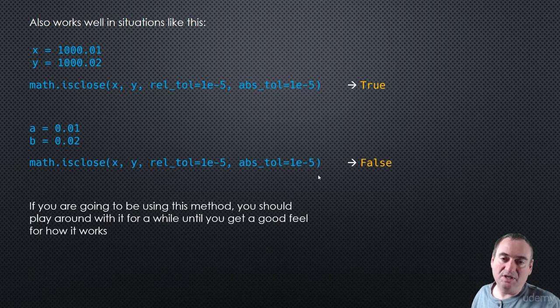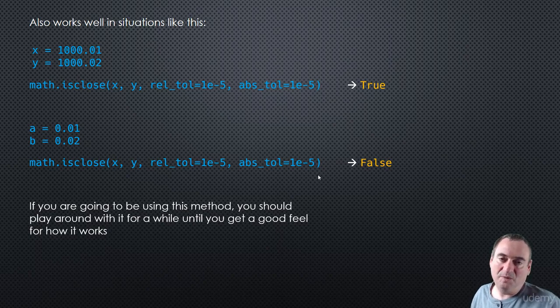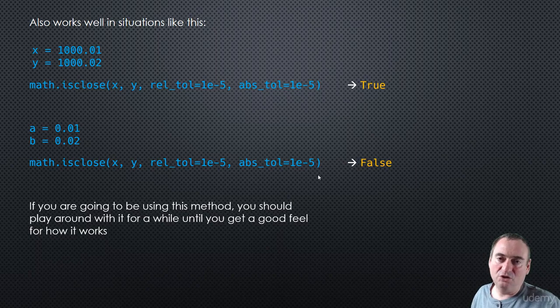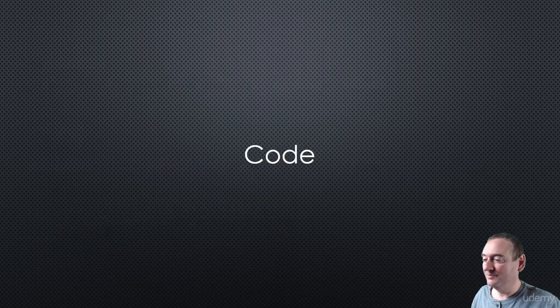You should also play around with these a little bit. After this video and after we've gone through the code, play around with different numbers, test it, and see how it works — start getting a feel for it. It's important that you have an understanding of how this works so that when you're writing your code, you know what tolerances to use. Sometimes the tolerances are actually dictated by the problem you're working on, but sometimes you have to come up with them yourself — so you want to try and strike a good balance.